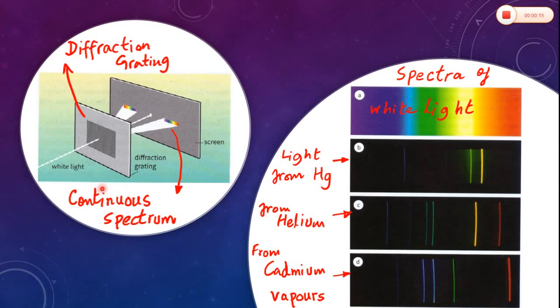When white light splits up into a continuous spectrum as it passes through a diffraction grating, each color has a unique wavelength. If the source is narrowed and is viewed through a diffraction grating, a line spectrum is seen.